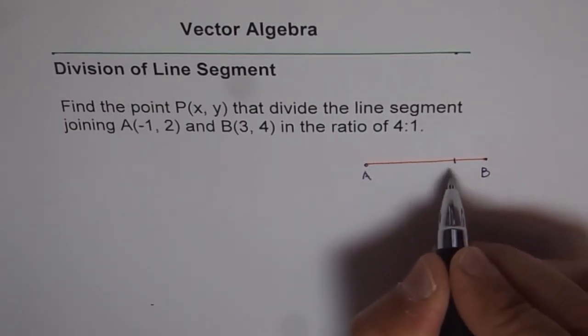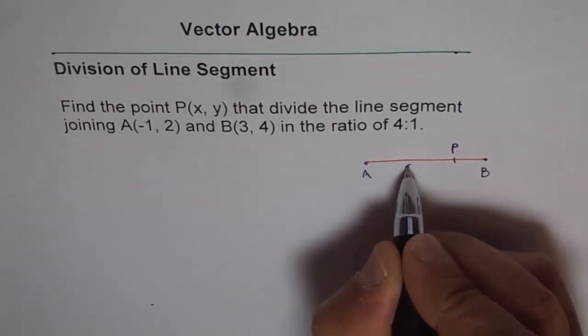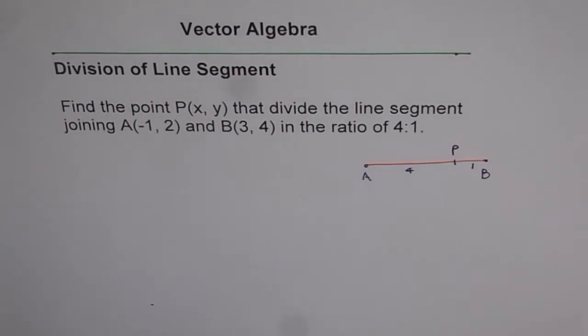That is, let us say that point P is somewhere here and this length, A to P is 4 and from P to B is 1. That is 4 to 1. So that is the question before us.